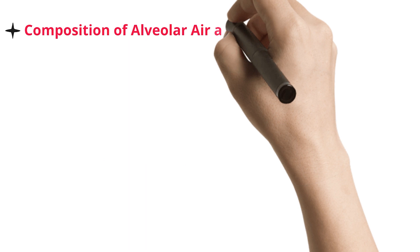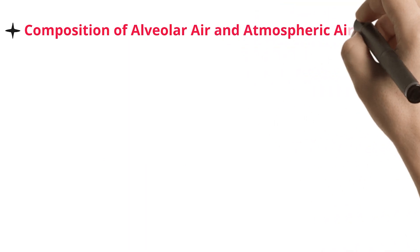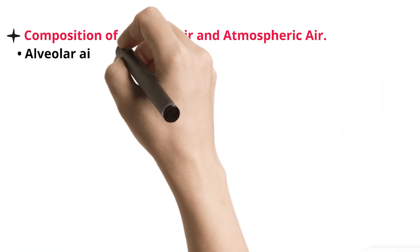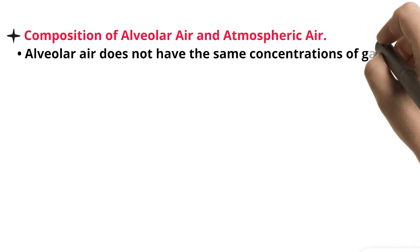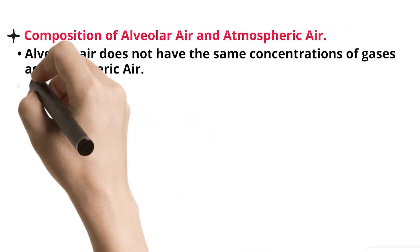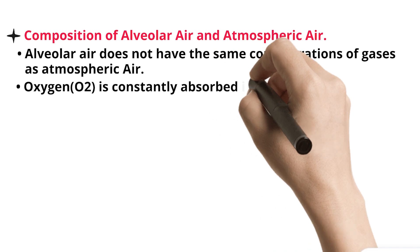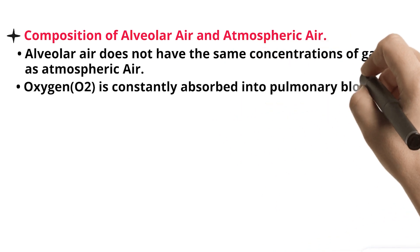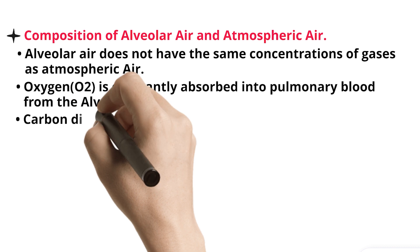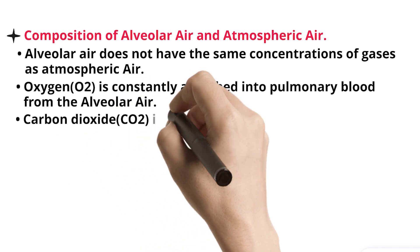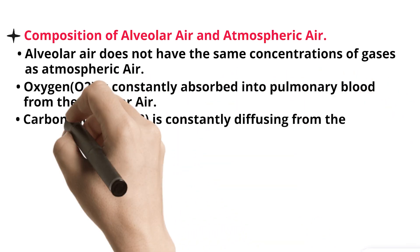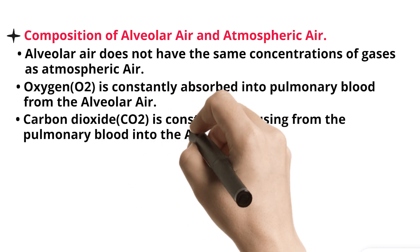Composition of Alveolar Air and Atmospheric Air. Alveolar air does not have the same concentrations of gases as atmospheric air. Oxygen (O2) is constantly absorbed into pulmonary blood from the alveolar air. Carbon dioxide (CO2) is constantly diffusing from the pulmonary blood into the alveoli.